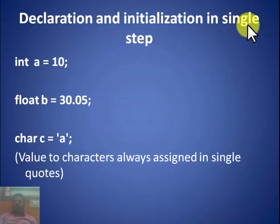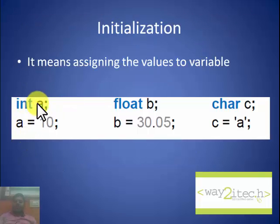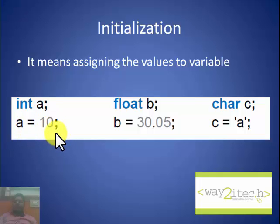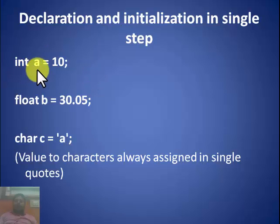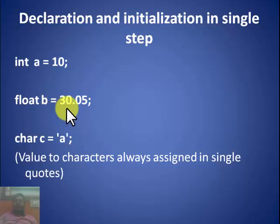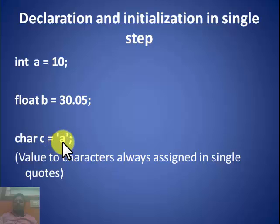Declaration and initialization can also be done in a single step. For example: int a = 10 means a is a variable of int type having value 10. Float b = 30.05 means b is of float type with value 30.05. Char c = 'a' means c is of char type with value 'a'.